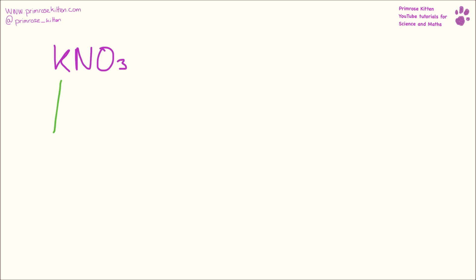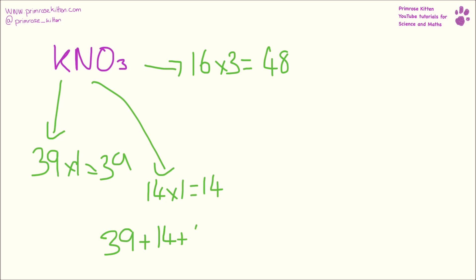Here we have potassium nitrate KNO₃. Potassium has a mass of 39 and there's one of them, so that gives us 39. Nitrogen has a mass of 14, and there's one nitrogen, so that's 14. Oxygen has a mass of 16 and there's three of them, so that gives us 48. If we take 39 plus 14 plus 48, we get a total mass of 101.